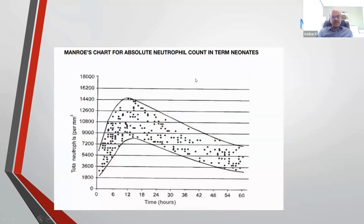We have Monroe's chart for the absolute neutrophil count in term babies. It's age-dependent, and in premature babies this is not that well-defined. Using the white cell count as a definite marker of sepsis — even using band cell or absolute neutrophil count — these are corroborative markers, but you wouldn't treat based on that alone.